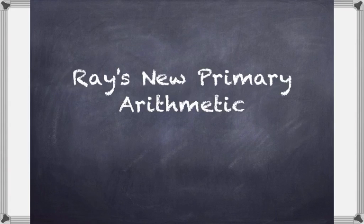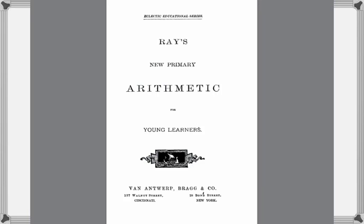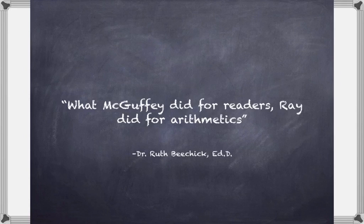Now the main textbook we'll be working with is going to be Ray's New Primary Arithmetic, and that's going to be a book that you'll be able to download and print right from this website. This is what the inside cover page looks like: Ray's New Primary Arithmetic for Young Learners. That's going to be the one we'll be doing. All of our lessons are based on this textbook, the first part of it, for Grade 1.